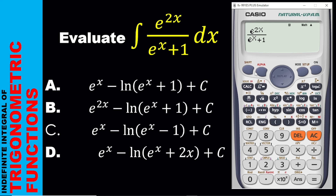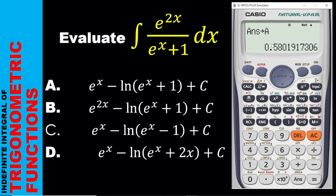The next thing is to press the calc button. Remember, we are integrating at x equals 0.1. So you type 0.1 and press the equal sign button. It means when we integrate this at x equals 0.1, this is the answer we get. In order not to forget, you must save this — press shift, press store, and then press A.